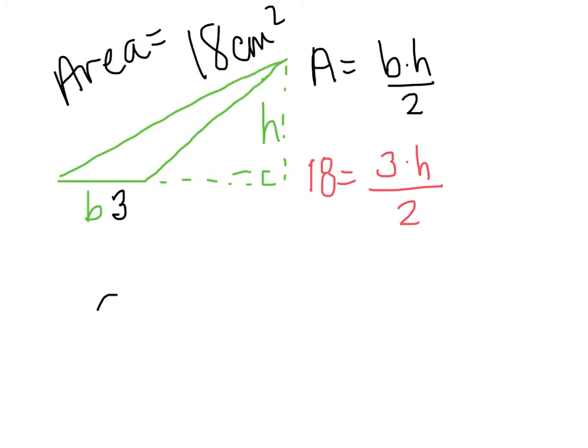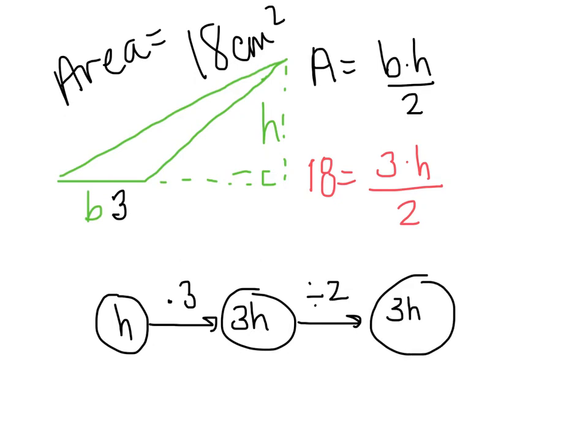So I'm going to draw my flow chart here just to show or remind us. We're going to start with h. The first thing that happens to h is it gets multiplied by 3. We're left with 3h, and then it gets divided by 2. So my end circle gives me 3h divided by 2. Remember the 3 is in place of our b for base. And for this particular flow chart, we know that that equals 18. And now we're ready to backtrack. So the opposite of divide is to multiply by 2. 18 multiplied by 2 gives us 36. And then the opposite of multiply by 3 is to divide by 3. And 36 divided by 3 is 12.